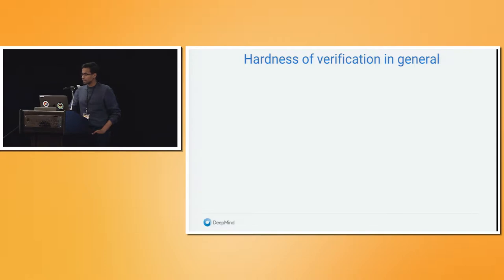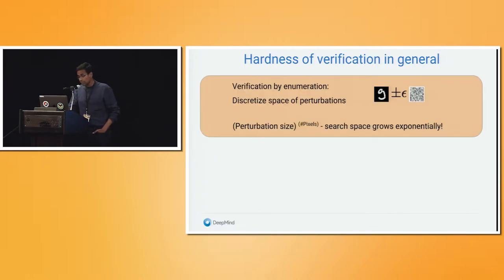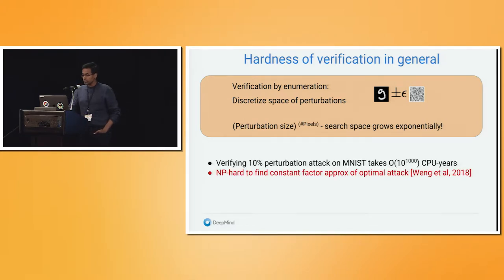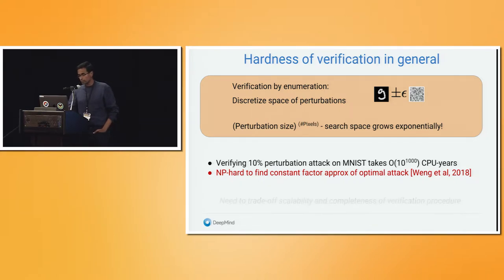Verification is difficult. The most naive approach is to discretize the input space and do a brute-force search over all possibilities, but this grows exponentially with input size. Even for a small dataset like MNIST, verifying robustness to a ten percent perturbation would take on the order of 10^1000 CPU years. It has recently been shown that finding even an approximation of the optimal attack within a constant factor is NP-hard, so we must trade off scalability and completeness.